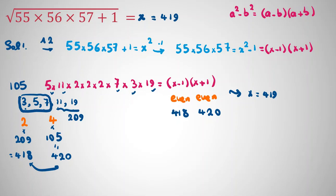Now let me tell you second solution. In second solution, I want to multiply and I want to show you the algorithm for calculating square root. Here, square root of 55 times 56 times 57 plus 1. And I want to find this square root.